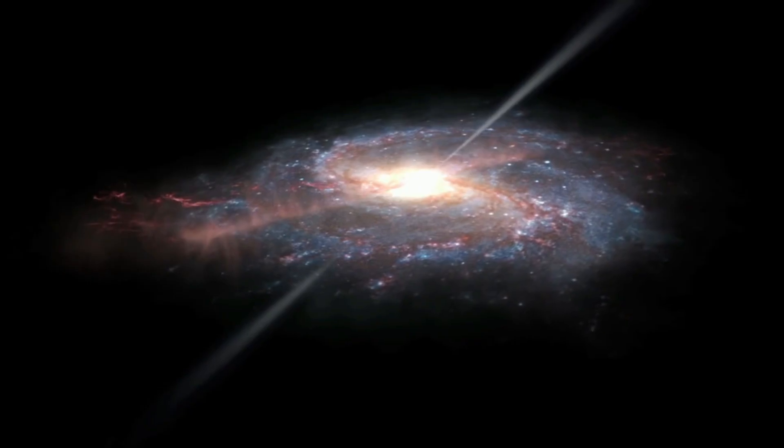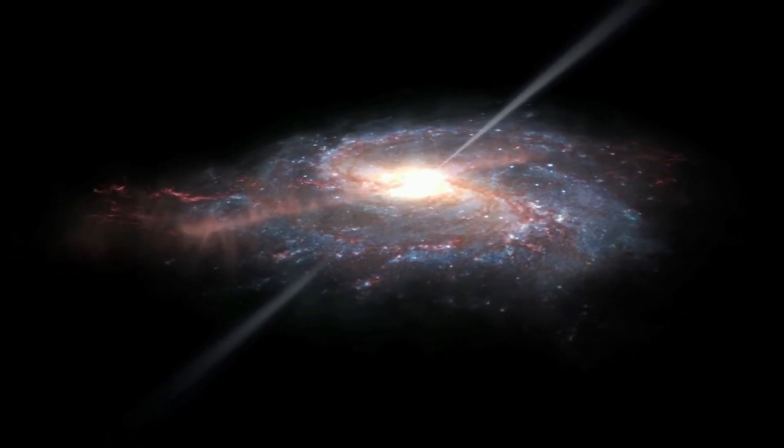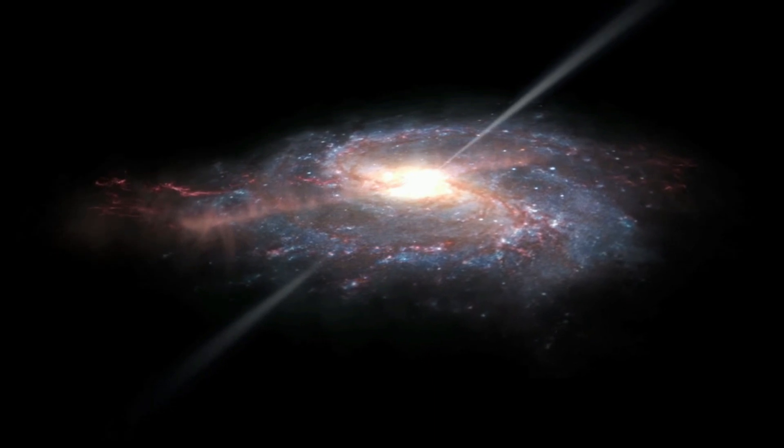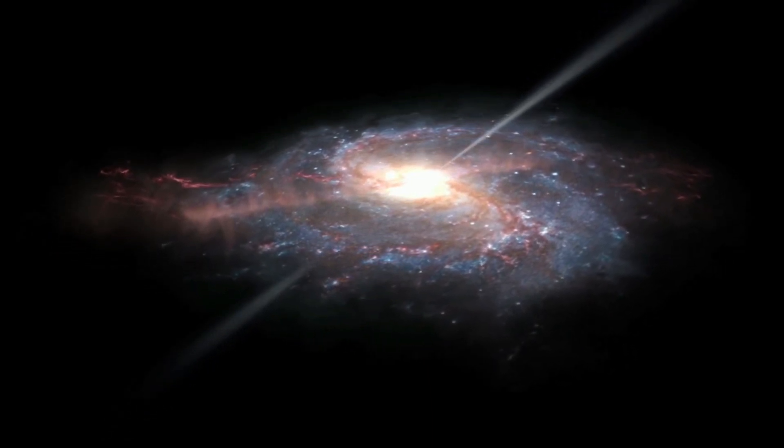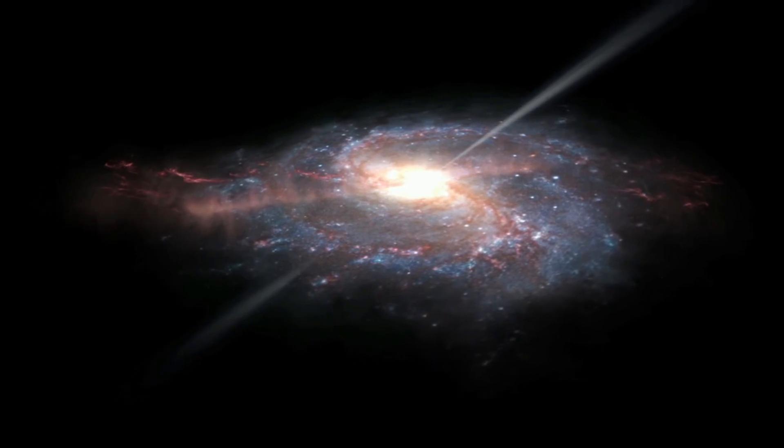At the heart of the Milky Way lies a supermassive black hole, Sagittarius A. The colossal structure is about 4 million times the mass of the Sun and lies approximately 26,000 light-years away from Earth, according to a statement from NASA.